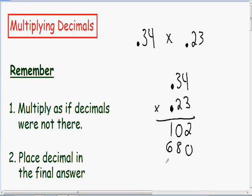And just like in a normal multiplication we need to add all these numbers together. 2 plus 0 is 2. 0 plus 8 is 8. And 1 plus 6 is 7.